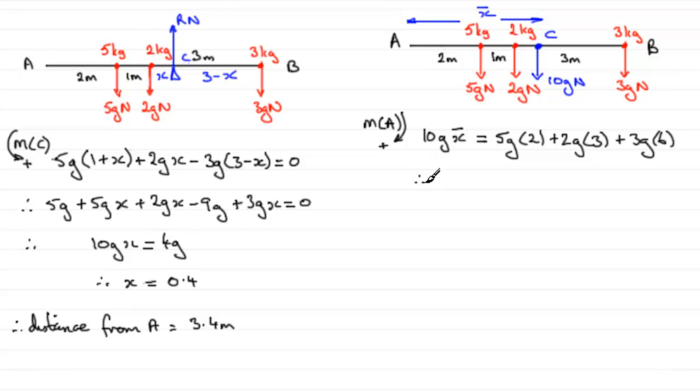So, when we work this out, we end up with 10g X bar equals, we have 10g plus 6g plus 18g. And that gives us 10g X bar equals a total of 34g. And if we divide both sides by 10g, the g's cancel and you get 34 divided by 10. So, it follows that X bar equals 34 divided by 10, which is 3.4. So, we're 3.4 metres away from A for the centre of mass.